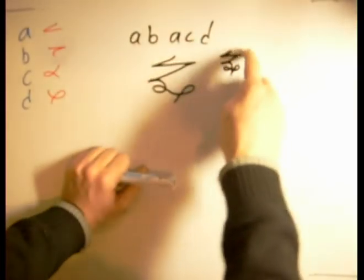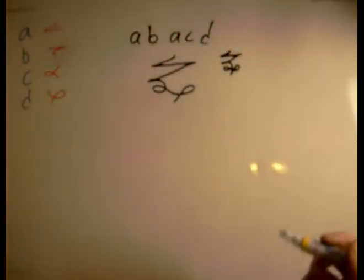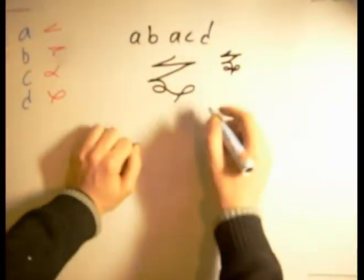As you can see, A, B, A, C, D. Very simple. You draw long chains like this.